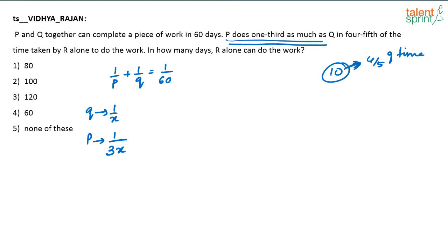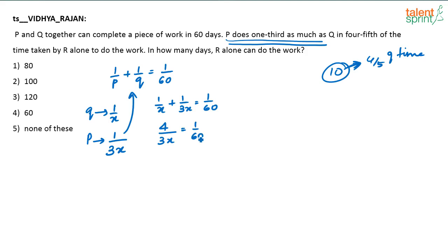So first we take this part. P does 1/3 as much as Q in 4/5 of the time taken by R alone to do the work. When you compare the efficiency of Q and P, P is only 1/3 as efficient as Q. Or we can substitute this. What will you get? 1/x plus 1/3x is equal to 1/60. Or 4/3x is equal to 1/60. And you have 3x is equal to 60 times 4, so 3x equals 240, giving x equals 80.